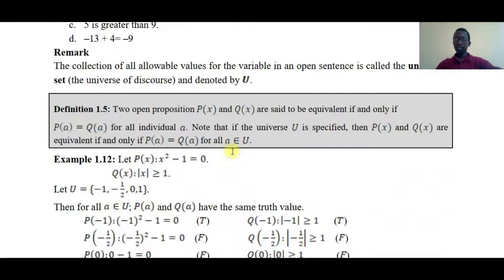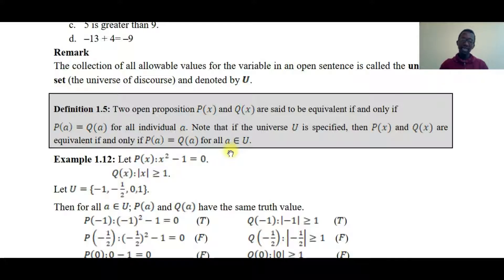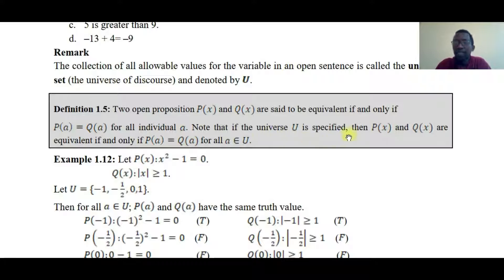Two propositions p(x) and q(x) are said to be equivalent if p(a) and q(a) have the same truth value for all individual a in the domain. If the universe U is defined, then p(x) and q(x) are equivalent if for every element a in U, p(a) and q(a) have equal truth values.